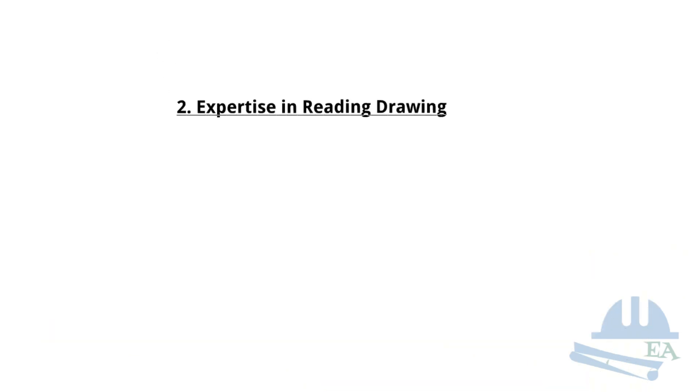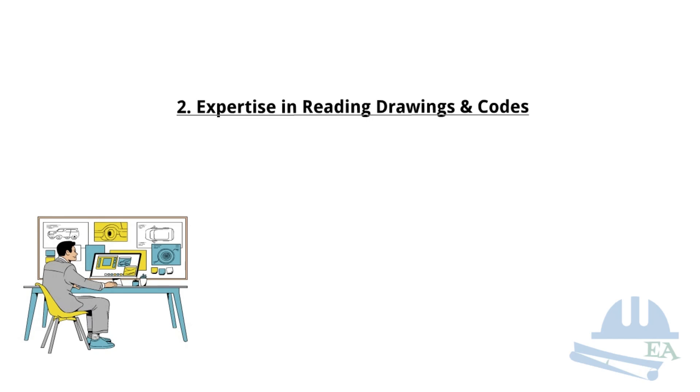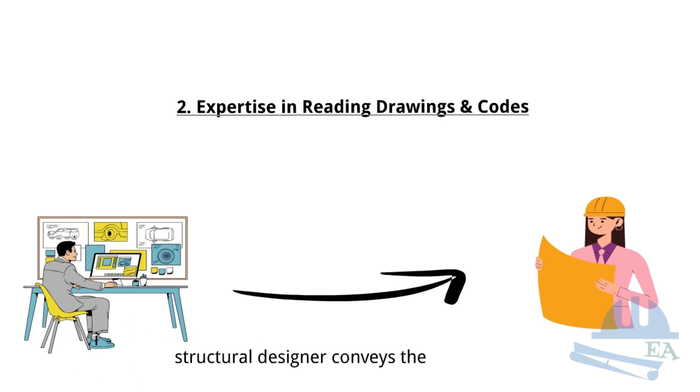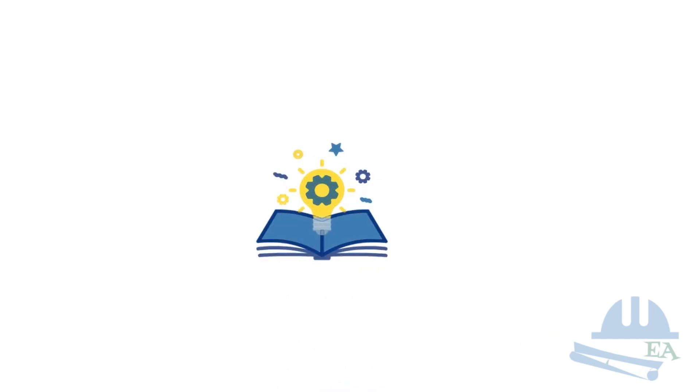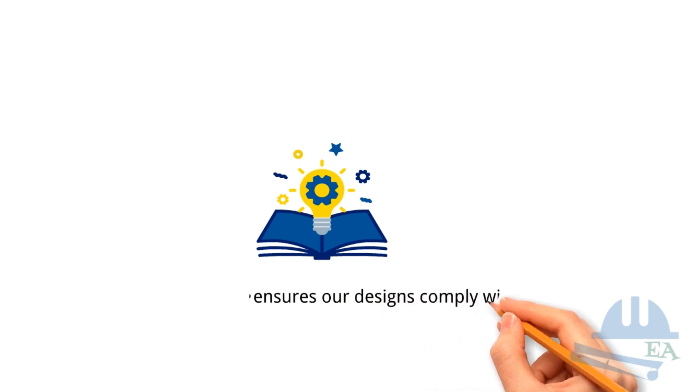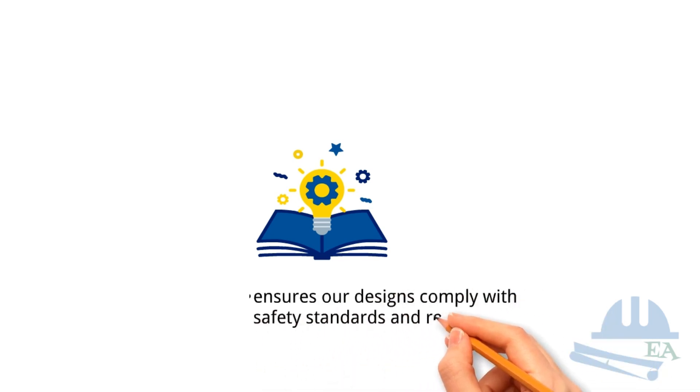Expertise in Reading Drawings and Codes. Structural drawings are our primary means of communication between the designer and the site engineer. They are the means by which the structural designer conveys the information that is essential to make the structure safe and sound. They detail the design intent and provide the necessary information for construction through these drawings. Understanding these drawings along with the relevant design codes ensures that our designs comply with safety standards and regulations. Precision and clarity are key here.